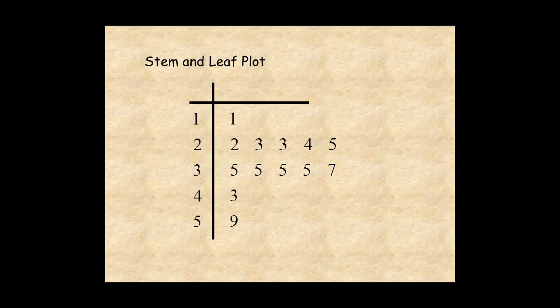A stem and leaf plot is a way of organizing data in a form that makes it easy to see the frequency of the different types of data. It shows how the data is spread out.